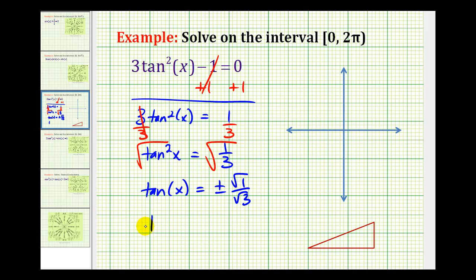So we want to determine where tangent x is equal to plus or minus 1 over square root of 3. And this ratio should remind you of a 30, 60, 90 triangle, where the short leg is 1, the hypotenuse is 2, and the longer leg is square root of 3.